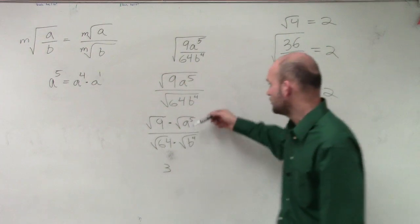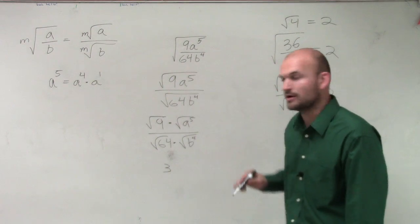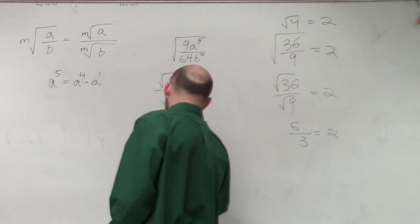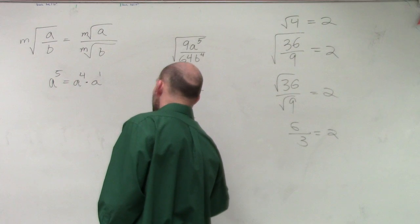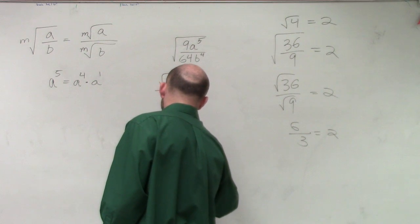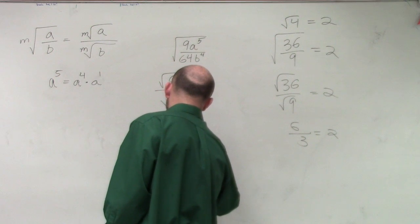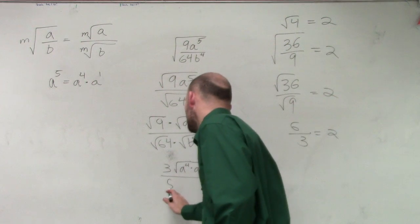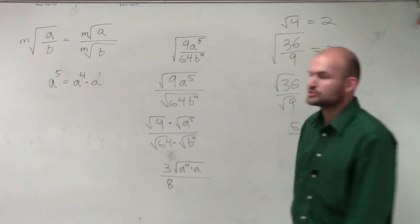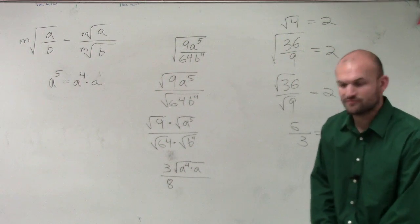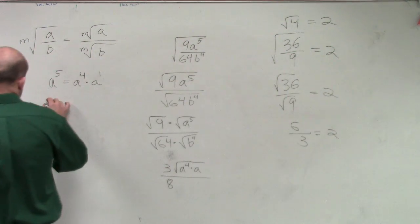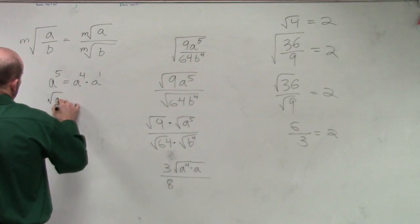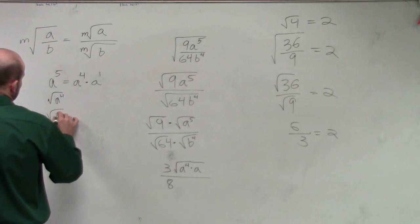So therefore, I'm going to rewrite this as the square root of a to the fourth times a, all over 64, which we know is 8. And then we've got to deal with the square root of b to the fourth. That's going to take us to the square root of a to the fourth and the square root of b to the fourth.